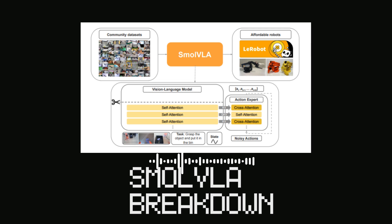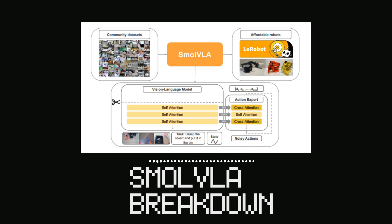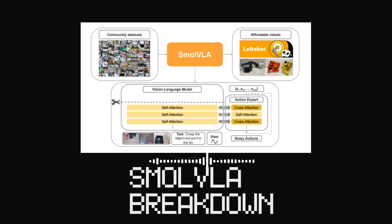Smol VLA essentially has two main components. First, there's the pre-trained vision language model, or VLM, which is responsible for perception. It's a compact VLM — specifically SmolVLM2 — that takes in sensory motor states like images from multiple RGB cameras and natural language instructions for the task. So it's the eyes and ears that also understand what you want it to do. One key efficiency measure is layer skipping: they literally skip computations in the VLM to achieve faster inference. The action expert only accesses features up to a specified layer, effectively halving the computational cost.